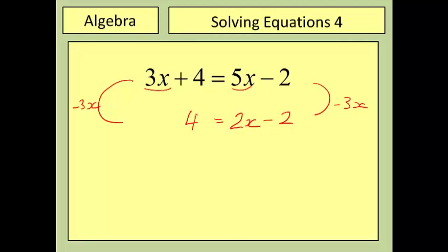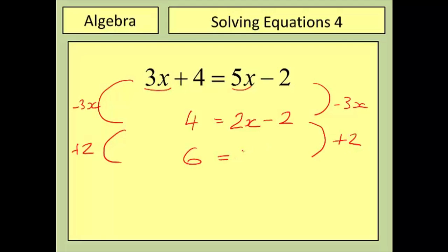By subtracting three x from both sides, I've kept this as a positive term, which makes the rest of the calculation easier. My next step is to add two to both sides, giving me six is equal to two x, and the final step is to divide by two.